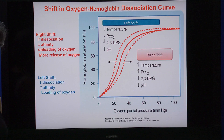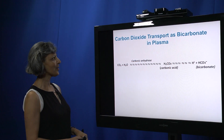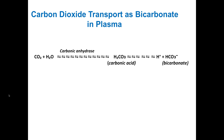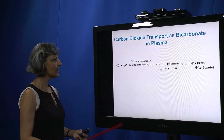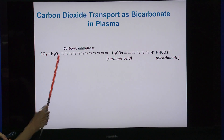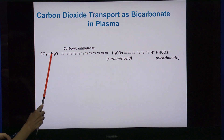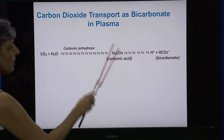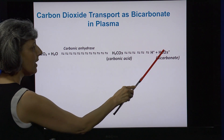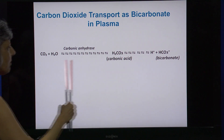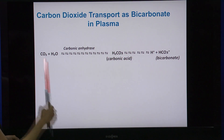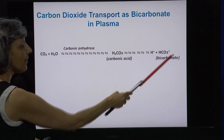That explains how oxygen is carried in the blood. Carbon dioxide is carried in the blood in three different ways, but we'll focus on the most common: 70% of carbon dioxide is carried in the blood plasma. Since plasma is mainly water, carbon dioxide dissolves in the plasma water through carbonic anhydrase, becoming carbonic acid, which then dissociates into hydrogen and bicarbonate. So most carbon dioxide — 70% — is carried in the form of bicarbonate.